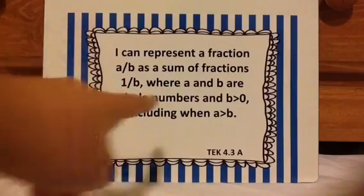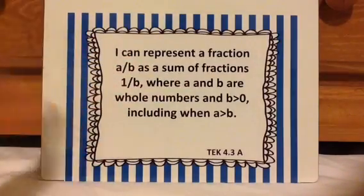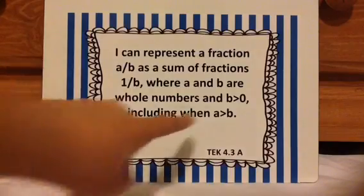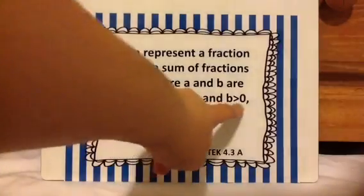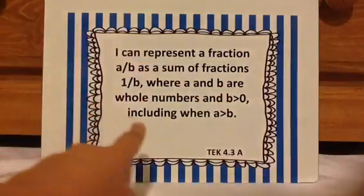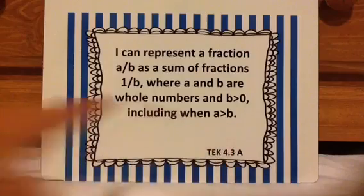They're saying where A and B are whole numbers — 1, 2, 3, 4, 5, 6, 7, and so forth. B has to be greater than 1, including when A is greater than B.